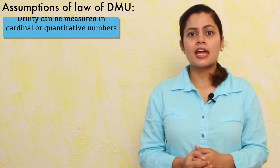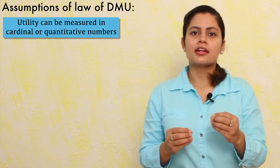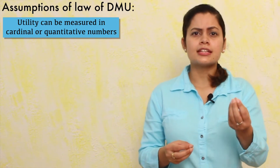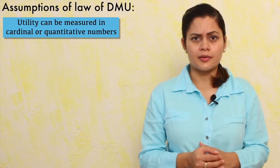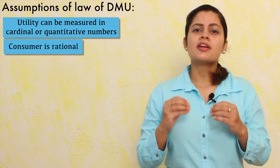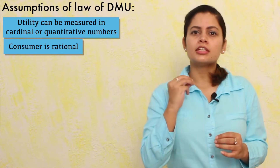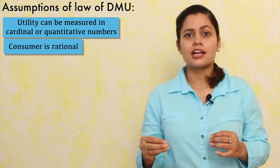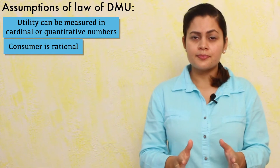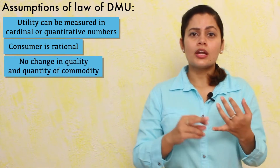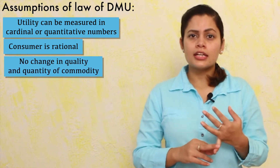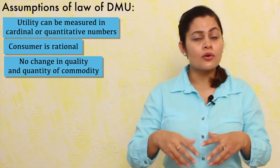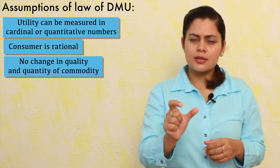The assumptions of the Law of DMU are: First, utility can be calculated in cardinal numbers — we can assign numbers to utility. Second, the consumer is rational — consumers know how many utils they should consume and when to stop. Third, the quality and quantity of the commodity will remain fixed — if you consume the commodity, its quality and quantity remain the same throughout.